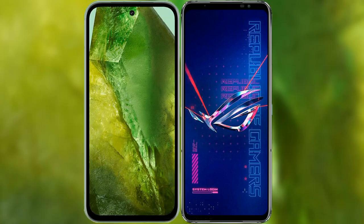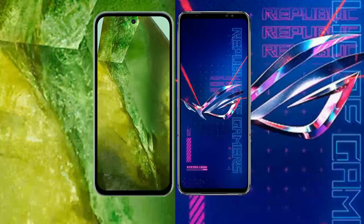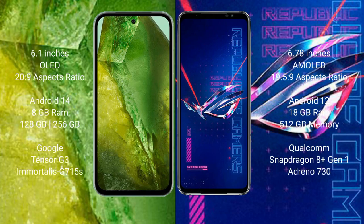I will compare the new Google Pixel 8a with the ASUS ROG Phone 6 Pro. Google Pixel 8a comes with a 6.1-inch OLED display and Corning Gorilla Glass Victus 2. ASUS ROG Phone 6 Pro comes with a 6.78-inch AMOLED display.